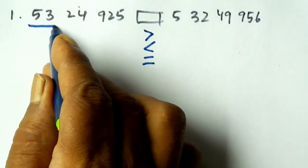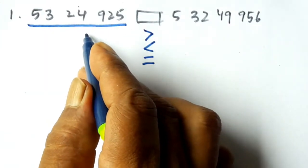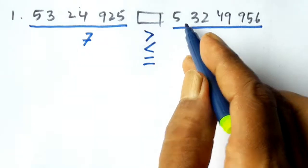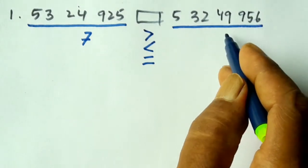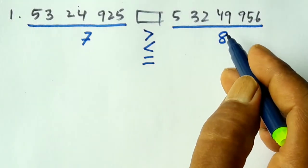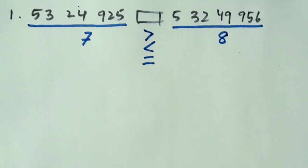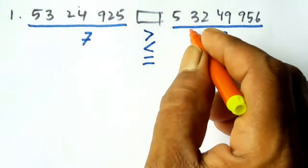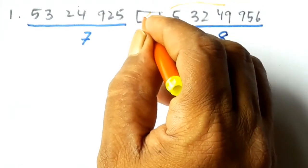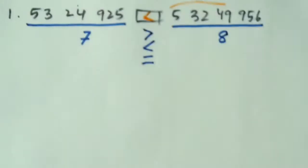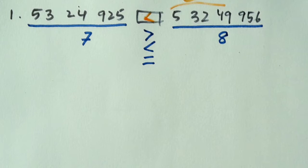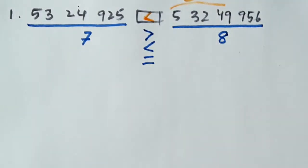Here the number is 22437, which has 5 digits. The other number 53249956 has 8 digits. The number with more digits is the larger number. So 22437 is less than 53249956. We write the less than symbol because the second number is the larger number.